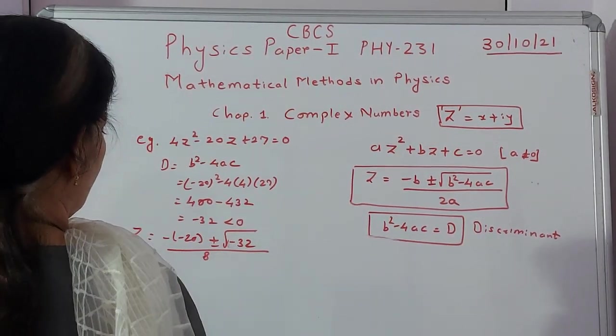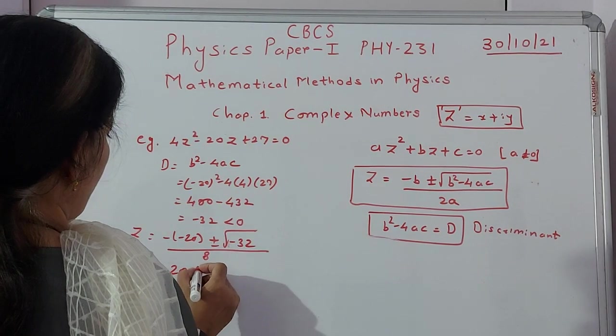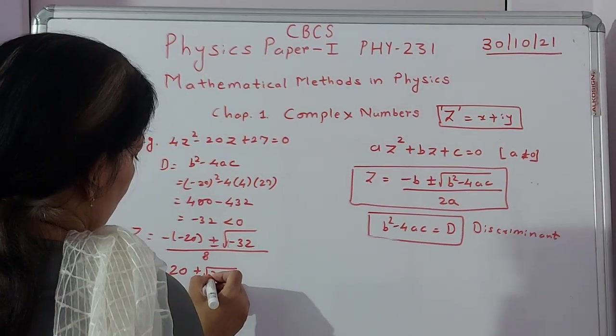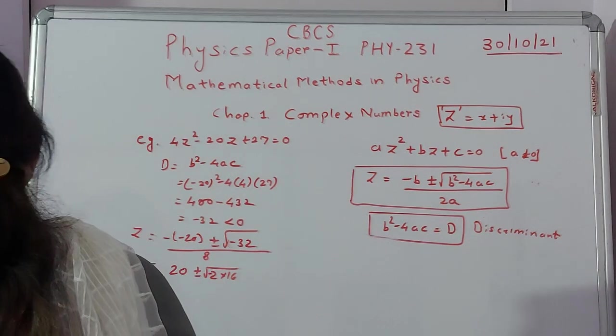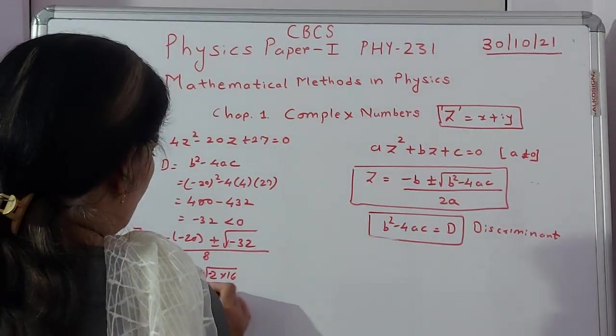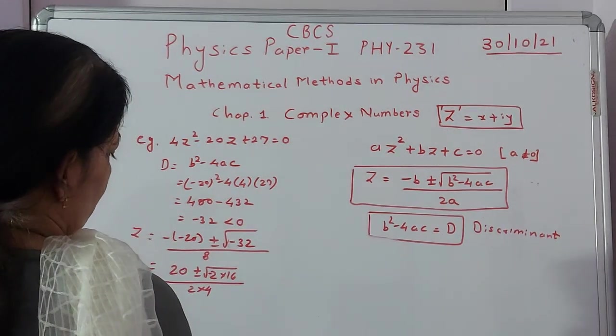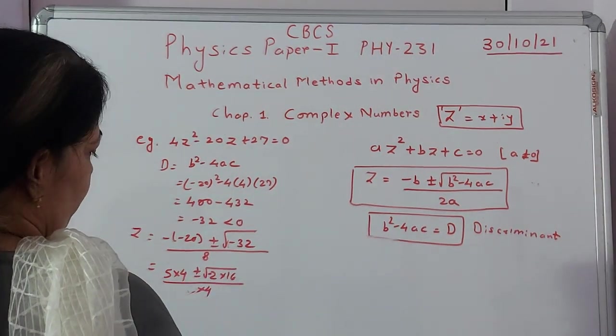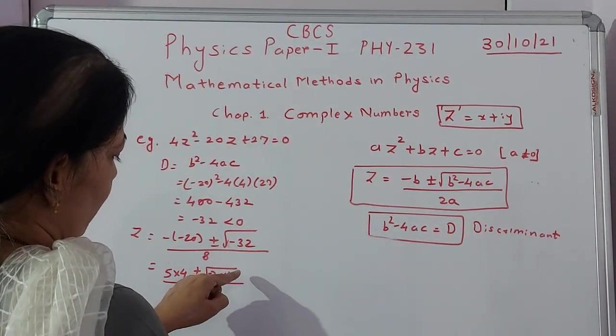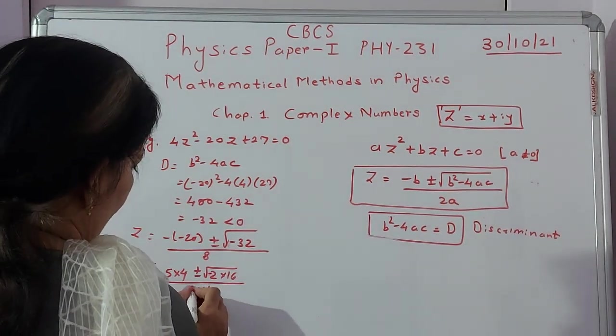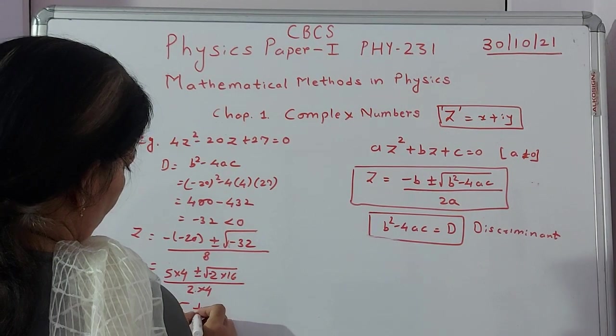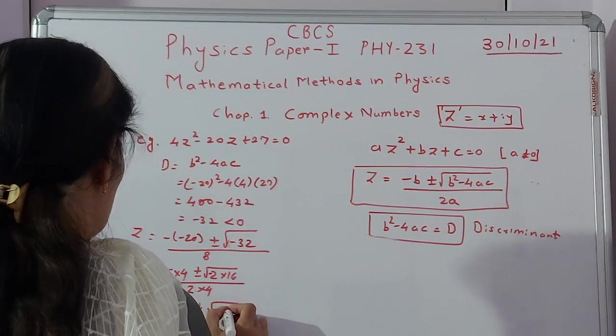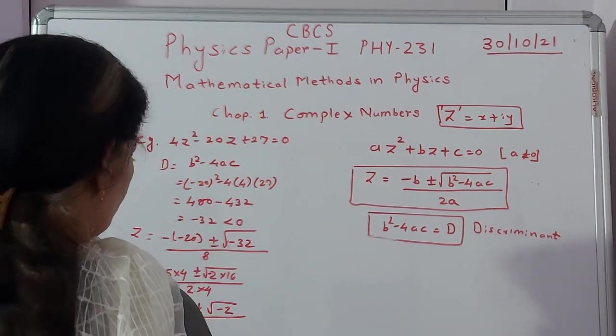So this will become 20 ± √(-32) / 8. So here I try and write 2 × 16 divided by 2 for 8. So even this we can write in a fashion which is 5 for 20. So take it out. This is √16 will be 4. This is 4, this is 4 gets cancelled. And what is left is (5 ± √(-2)) / 2, correct.